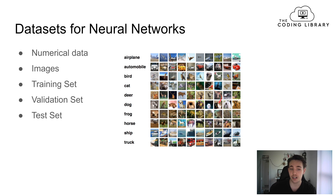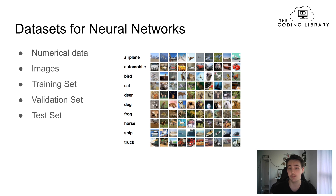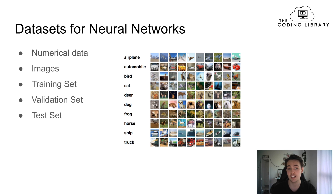On the right here we can see some examples of images that could be in a data set. For example, if we want to do classification, we might want to detect airplanes, automobiles, birds, cats — we'd have multiple images of different types in our data set. This is just a sample or a batch of our data sets. We're going to talk more about how many images you really need in your data set to have your neural network classify and predict the classes you want.